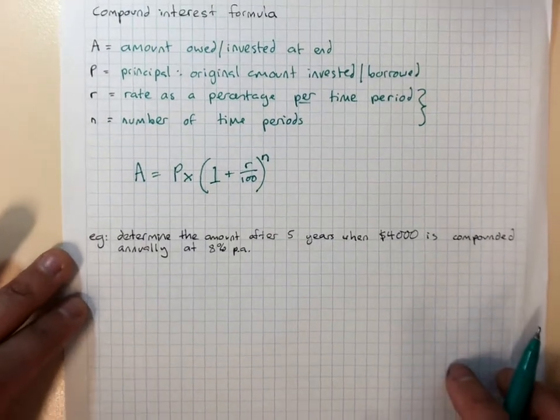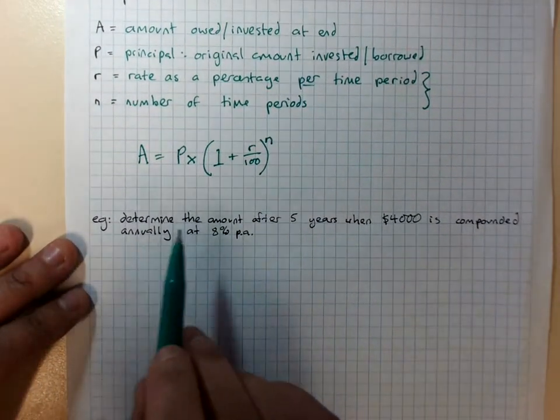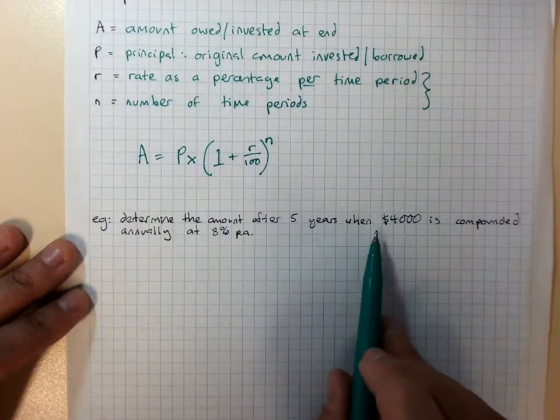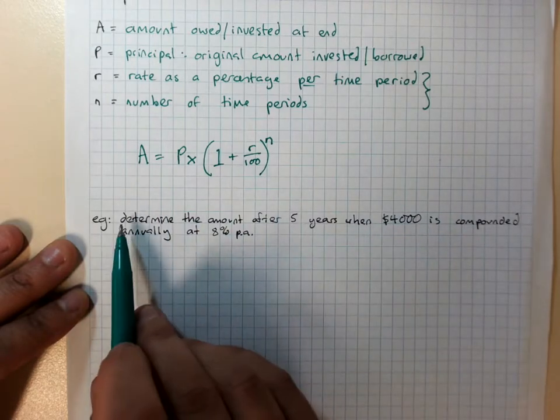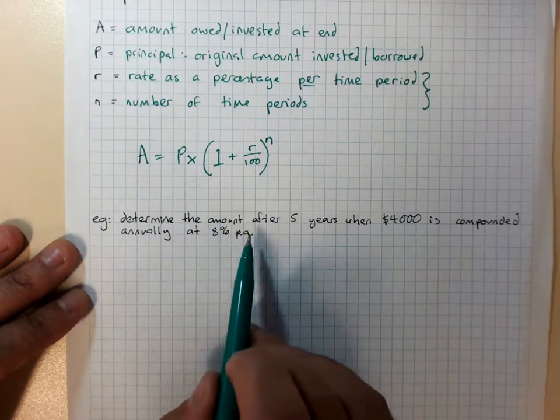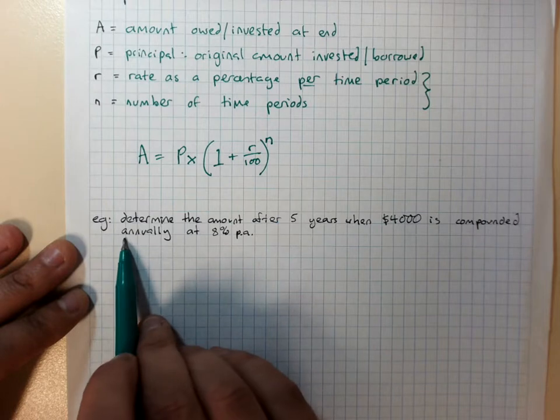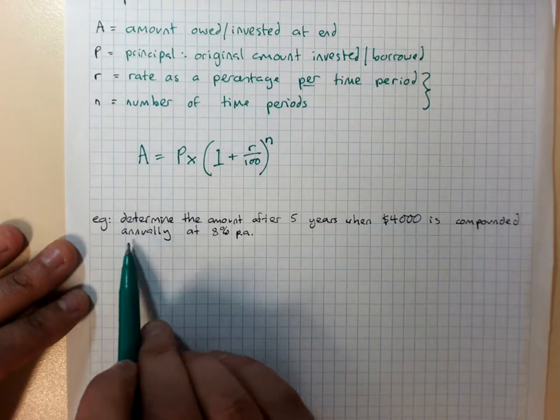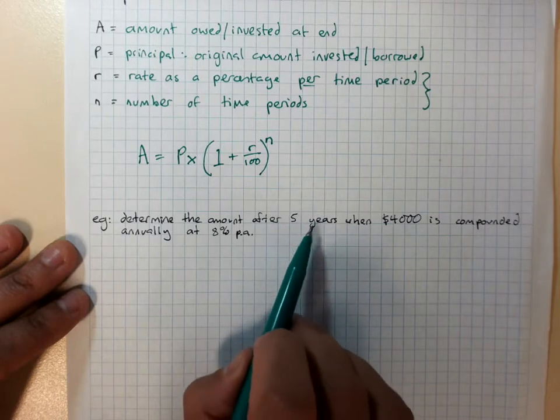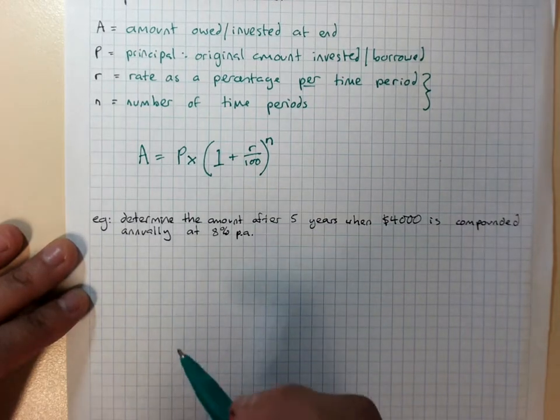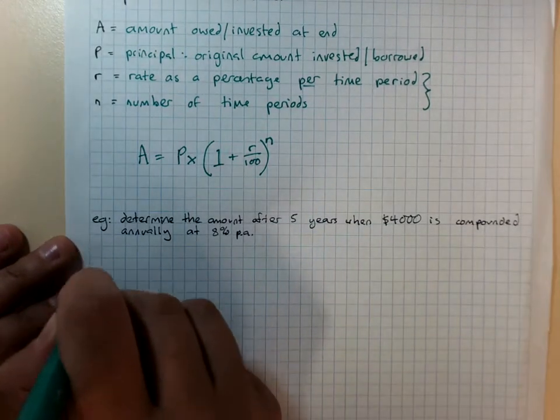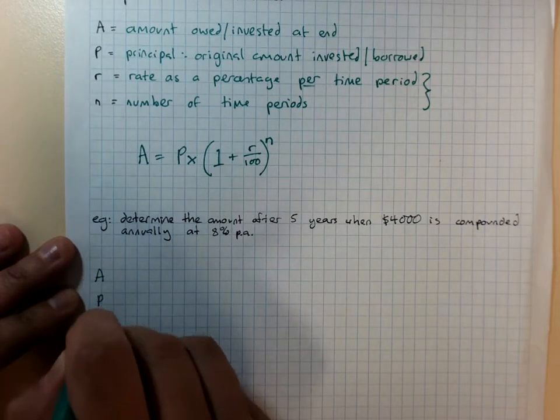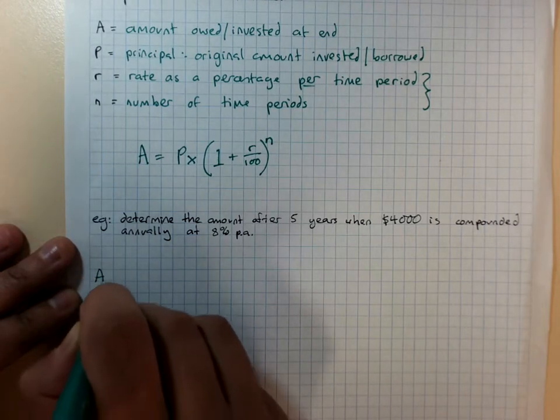So we'll look at how that works. Determine the amount after 5 years when $4,000 is compounded annually at 8% per annum. So R per annum, N number of years, 5 years. Per annum and years have to match up. It's always a good idea to write A, P, R, N and say what they are.